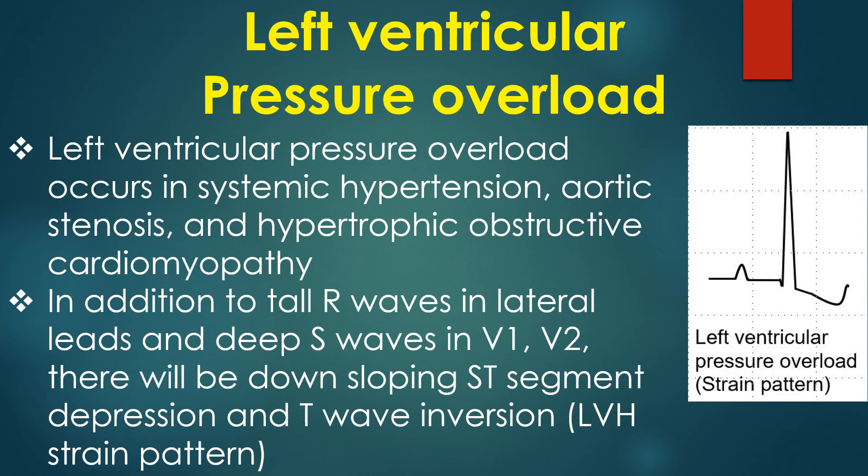Left ventricular pressure overload occurs in systemic hypertension, aortic stenosis, and hypertrophic obstructive cardiomyopathy. In addition to tall R waves in lateral leads and deep S waves in V1 and V2, there will be downsloping ST segment depression and T wave inversion, i.e., the LVH strain pattern.